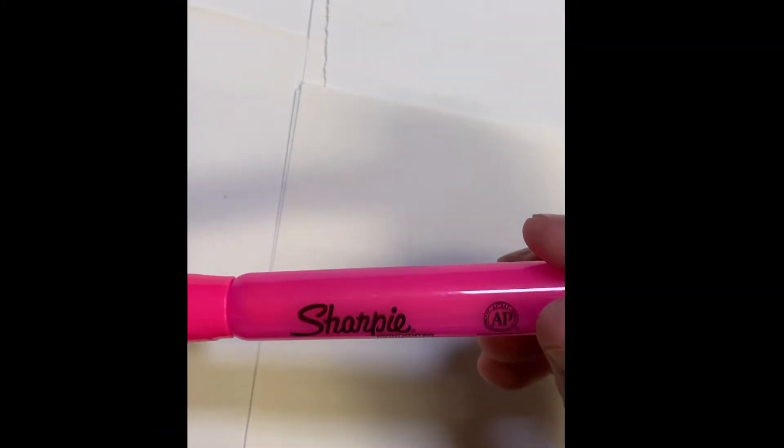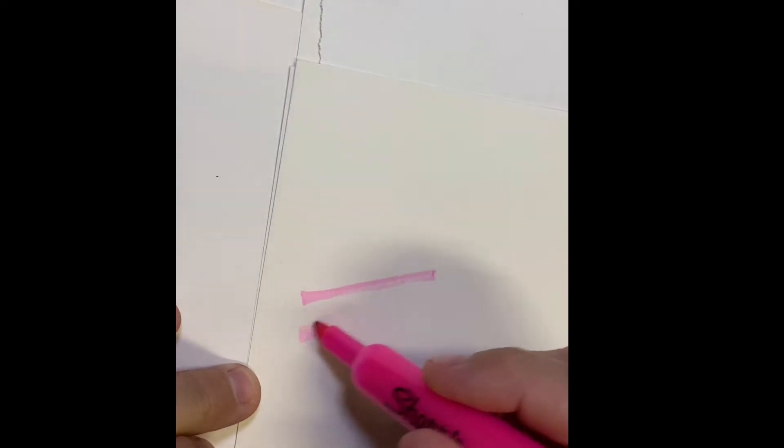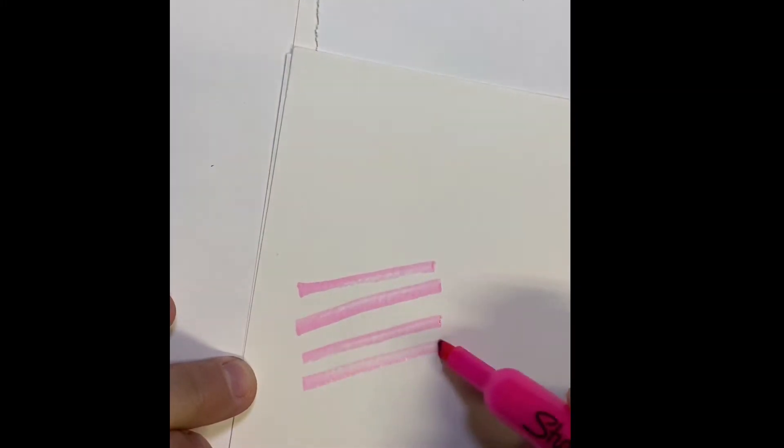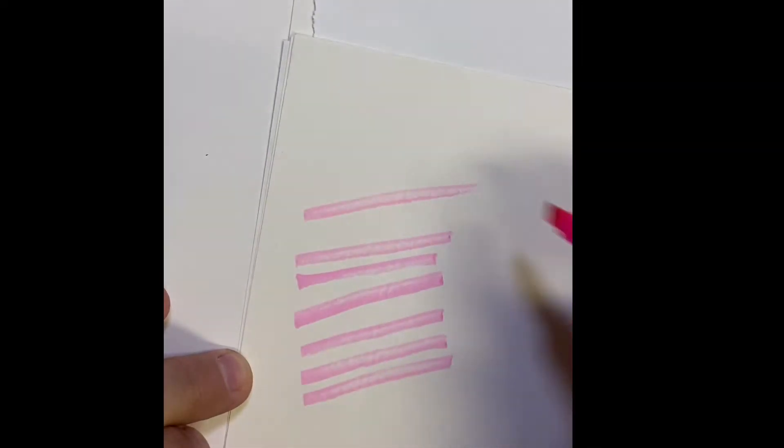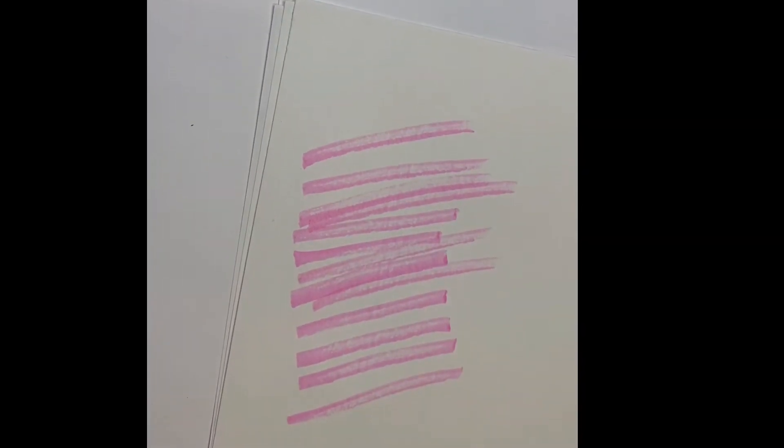Okay. We also have this Sharpie brand highlighter and let's see. It's working a little bit. It's just kind of dry. You can see how it's just not doing all that good. It really wouldn't be that good for highlighting. So we're going to get this one ready also to add some isopropyl alcohol.